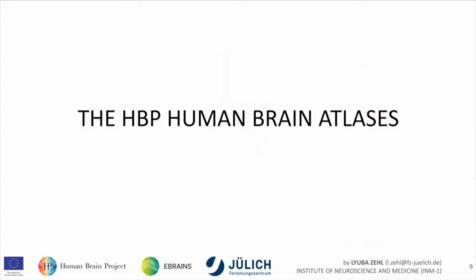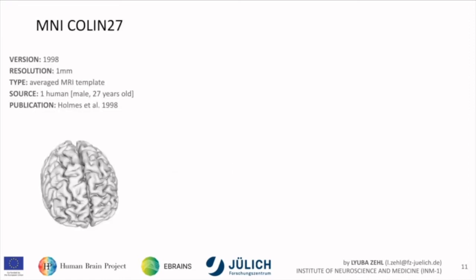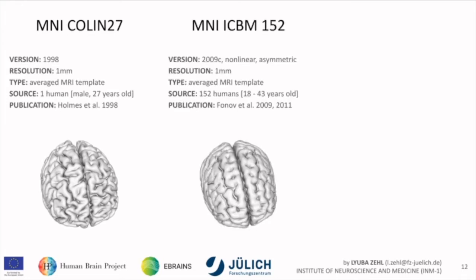What is the HBP actually providing? Brain atlases have been around for a long time, but what are the HBP human brain atlases about? Currently we're supporting three spaces in particular. The first is the MNI Colin 27 — importantly, the original version from 1998. It's an average MRI template at one millimeter resolution from one human male who was recorded several times, with the original publication from 1989.